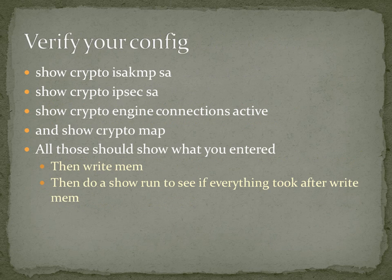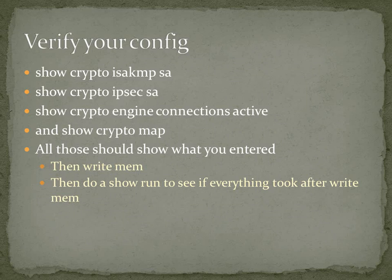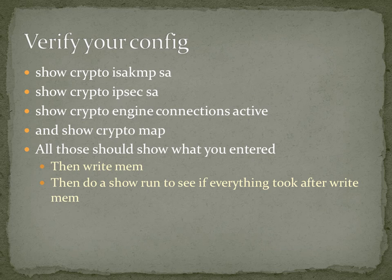Then verify your config — I really wish I had done that yesterday. Run: show crypto isakmp sa — you should see all five of your VPNs show up. Show your IPsec — all of them should show up. Show your crypto engine connections to make sure they're active. You can see if they've negotiated the key correctly; if they haven't, they won't show up in your list. Then show your crypto map, which should show everything you entered. Then write mem, do a show run, and dump it into Angel so you've got a backup copy.